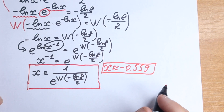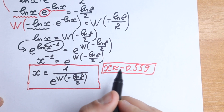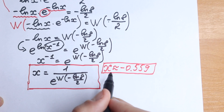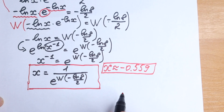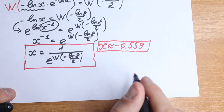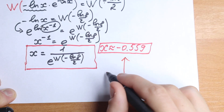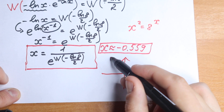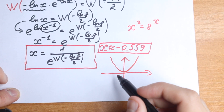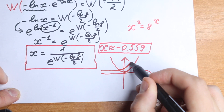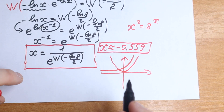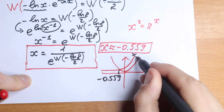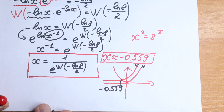Let me write the exact value and also explain graphically. We have one solution here. The Lambert W function has different branches, but in our case there is one and only one solution. On the left hand side we have x squared, which is a parabola, and 8 to the x, which is an exponential. In the positive part the graphs don't intersect, but in the negative part they intersect once at approximately minus 0.559.